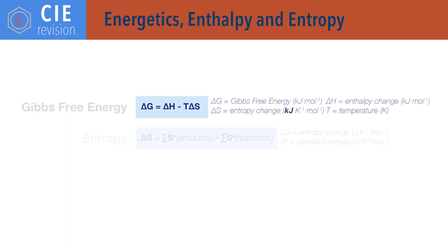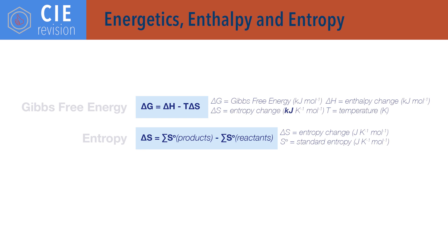Delta S, change in entropy, equals sum of entropies of products minus sum of entropies of reactants.